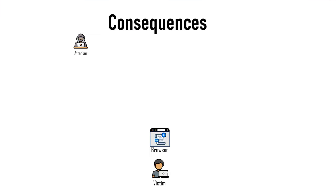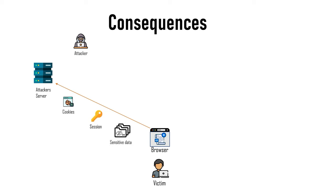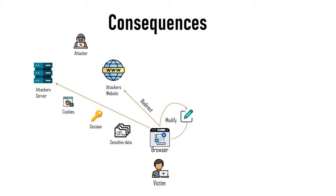As a result, the script is executed in the victim's web browser, which in turn might transmit the user's private data like cookies, session tokens, or other sensitive information to the attacker's destination, redirect the victim to a website controlled by the attacker, or read and modify page contents.